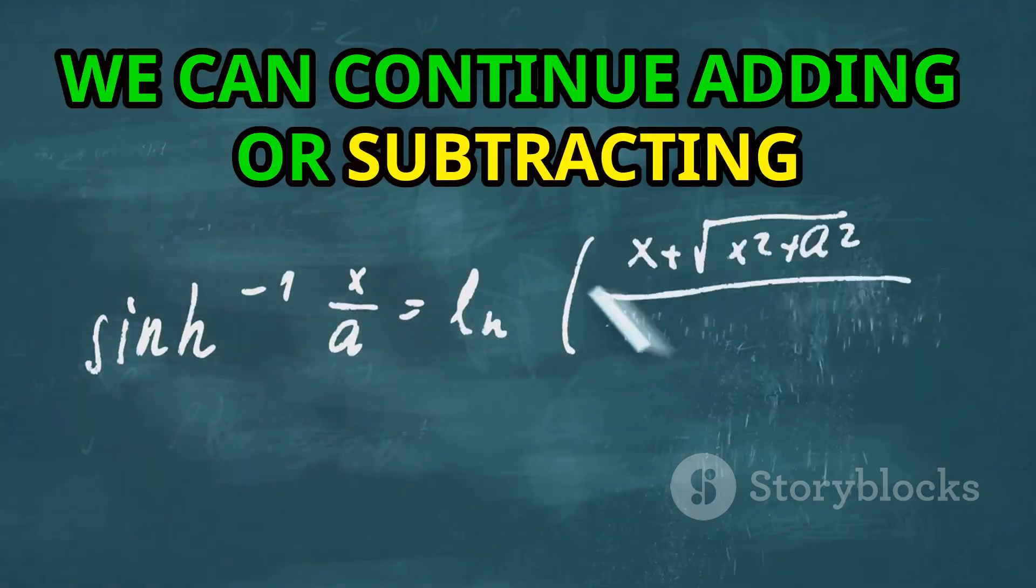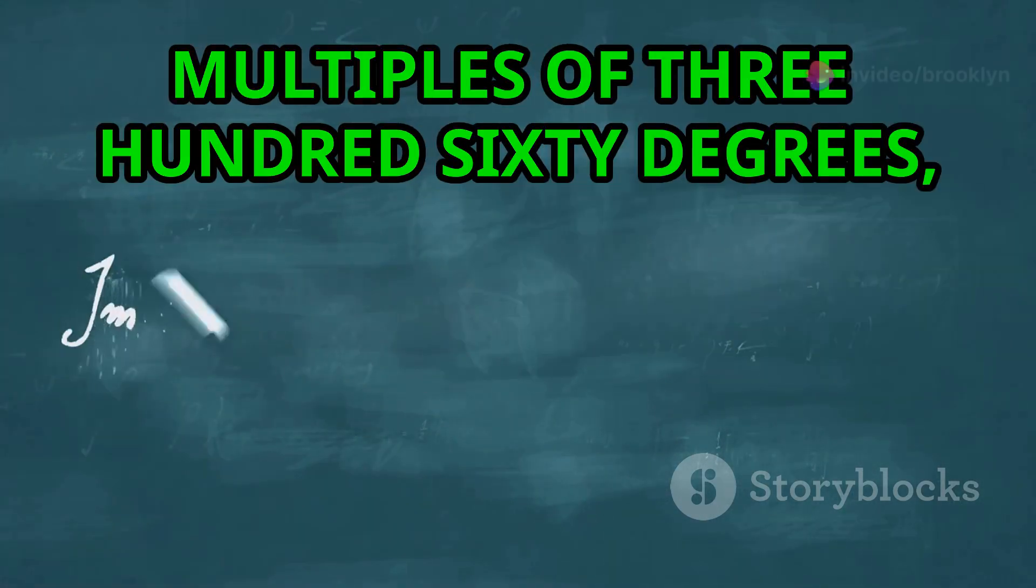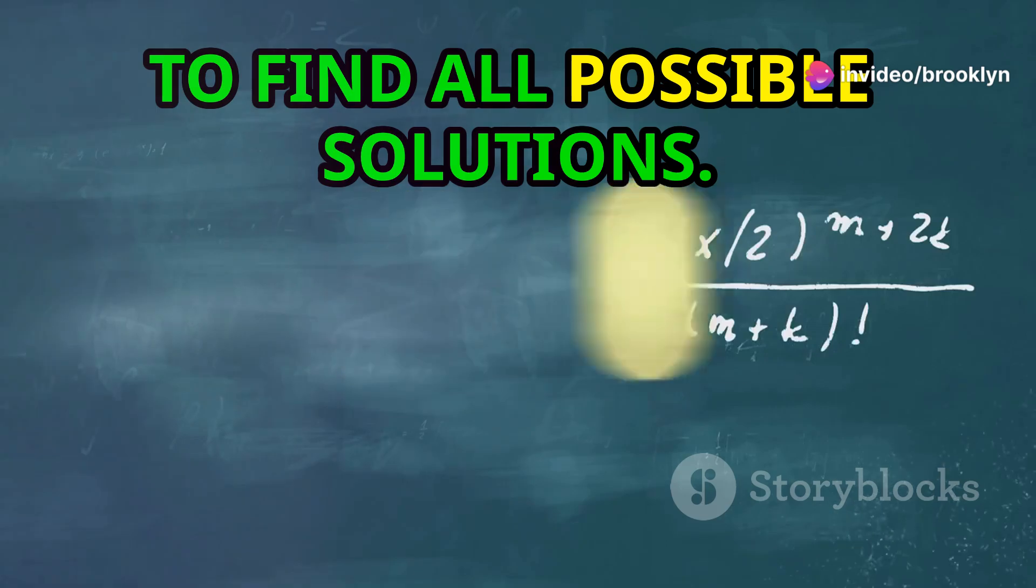We can continue adding or subtracting multiples of 360 degrees or 2π radians to find all possible solutions.